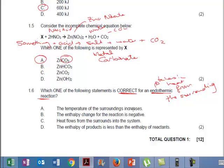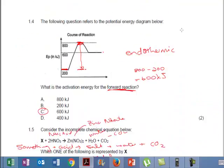Right, 1.6. It says which one of the following statements is correct for an endothermic reaction? Now remember an endothermic reaction is one that takes in heat from the surroundings. From the surroundings. That's what it does. So let's have a look at what our options are. It says the temperature of the surroundings increases. No, it doesn't because the heat is taken from the surroundings. So that's that. The enthalpy change for the reaction is negative. And that is not true because we're talking about delta H.